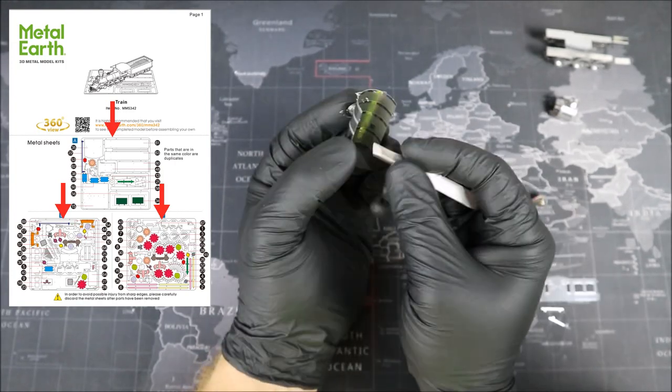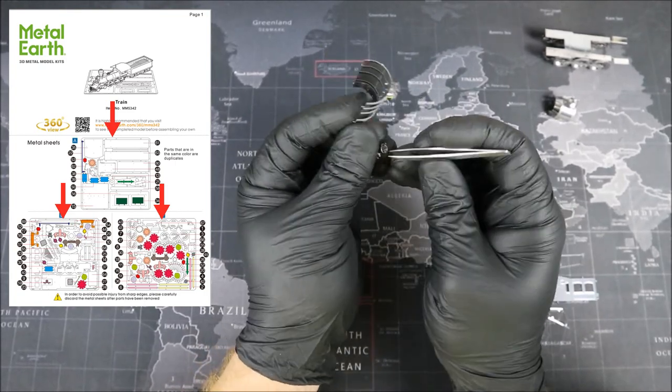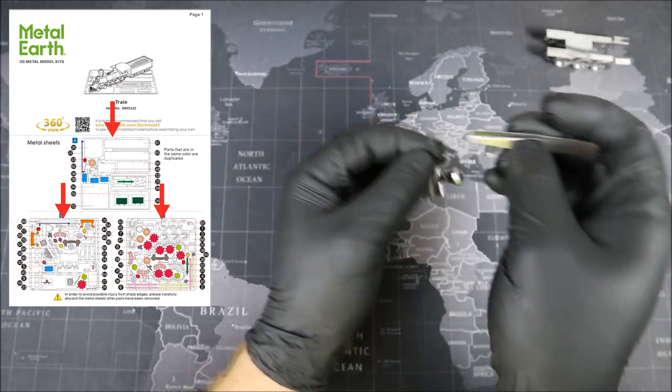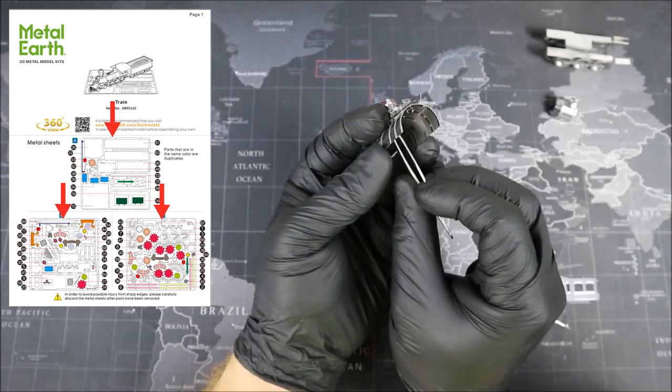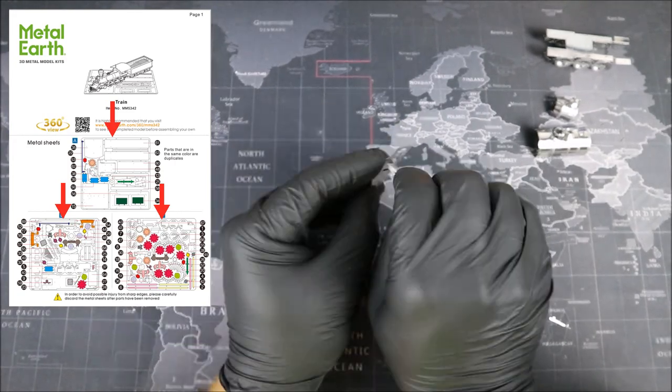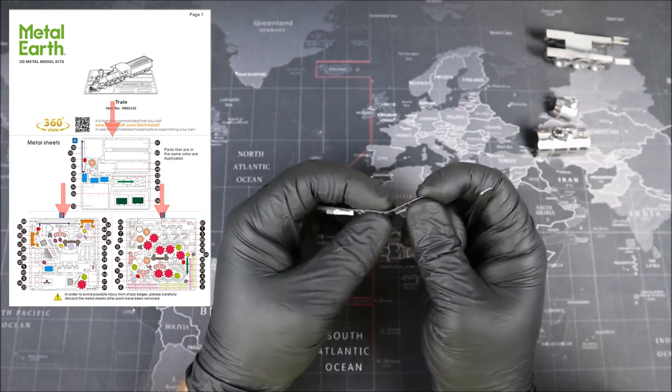Now, Groovers, when we're looking at our instructions, you'll see numbers. These numbers correspond with different parts on our metal sheet. Now, you'll also see these different colors here. Those colors represent duplicate parts. And that is very useful for finding multiple pieces like the train wheels a little bit later on. Okay, now I just gotta turn the page over.